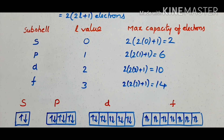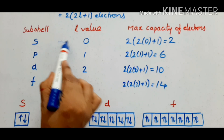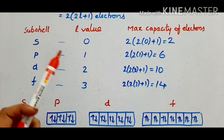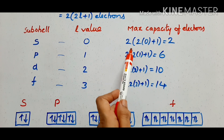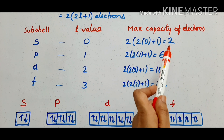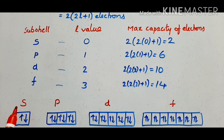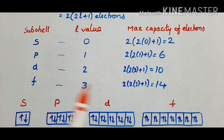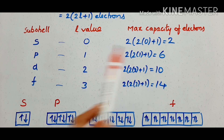The L values are: for s, L equals 0; for p, L equals 1; for d, L equals 2; for f, L equals 3. Using the formula 2(2L + 1), we can calculate the maximum number of electrons a subshell can accommodate. For the s orbital, this gives 2 electrons. For the p orbital, the maximum number of electrons is 6.